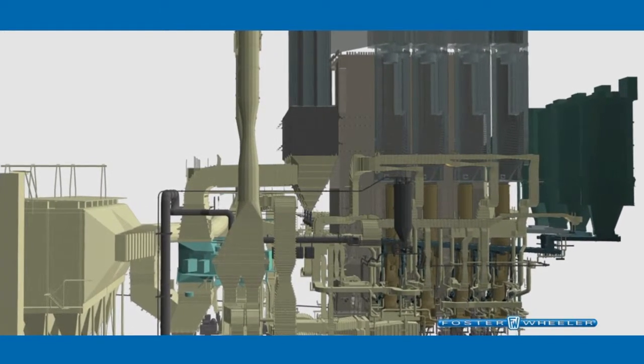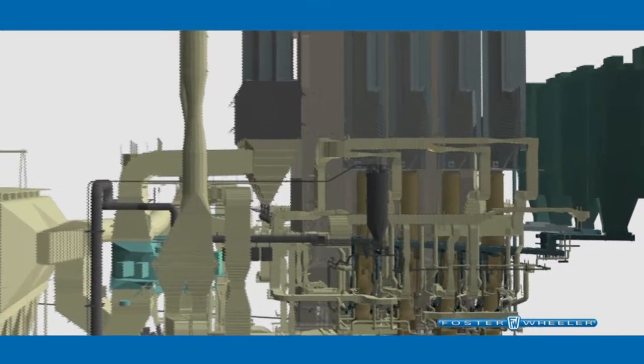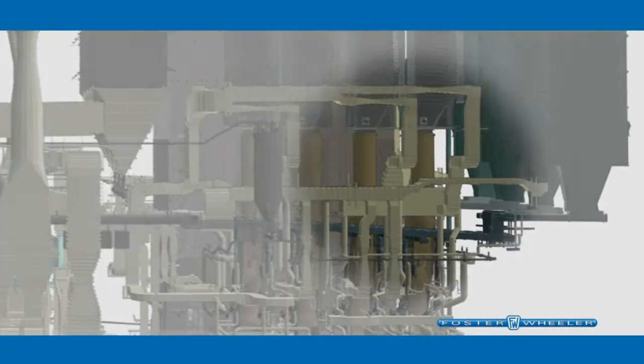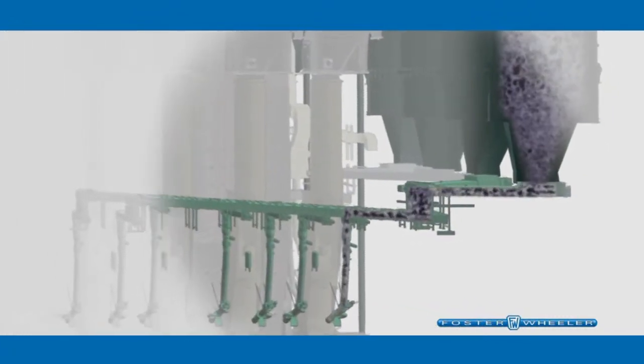Conventional pulverized coal combustion technology requires the fuel to be finely ground and dried before entering the furnace. Due to the forgiving nature of the CFB combustion process, these steps are not needed.